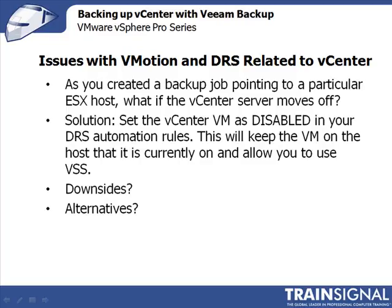But what if that vCenter server moves off that ESX server because DRS is trying to balance the load? The solution is to set the vCenter virtual machine as disabled in your DRS automation rules, and this will keep the virtual machine on the host that it's currently on and allow you to use VSS.